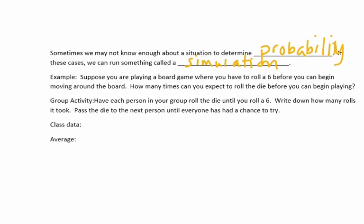The group activity looks like this: I would put you guys in groups, you'd have each person roll the die until you roll a six, then you'd gather that data and pass it to the next person. What I did sitting by myself is I basically simulated this on my own where I did 20 different trials and rolled a die until I got a six, then rebooted the trial. Here's the data that I got, and you're going to copy this into your notes next to class data.